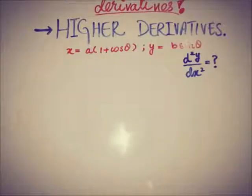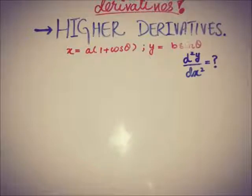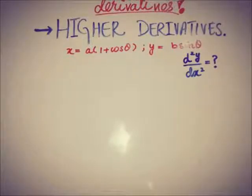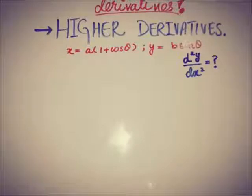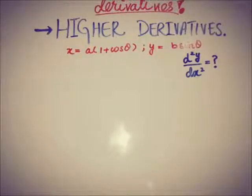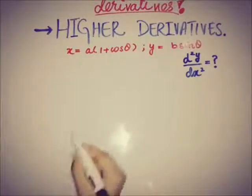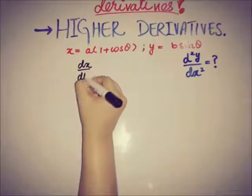Now moving towards an example where the function is in parametric form, where theta is the parameter. Here x = a(1 + cosθ) and y = b sinθ, and we have to find the second derivative of y with respect to x. We will use the chain rule because both x and y depend upon theta, so first we find dx/dθ and dy/dθ.